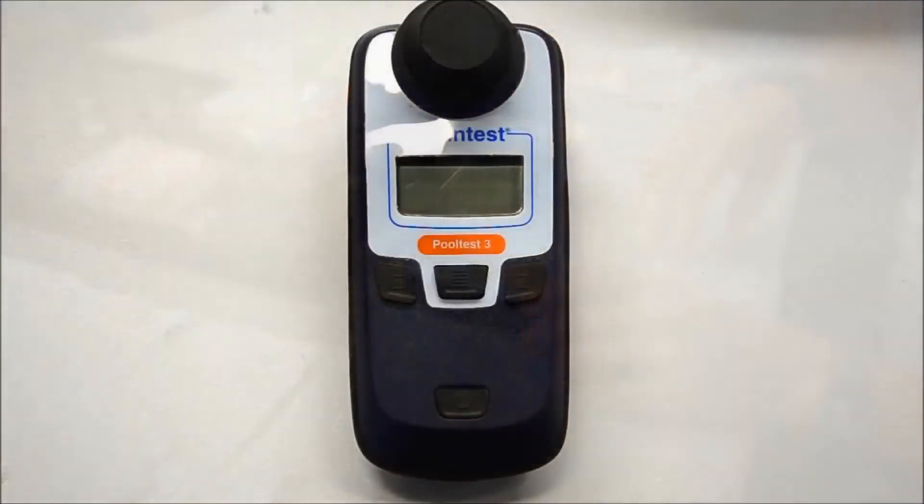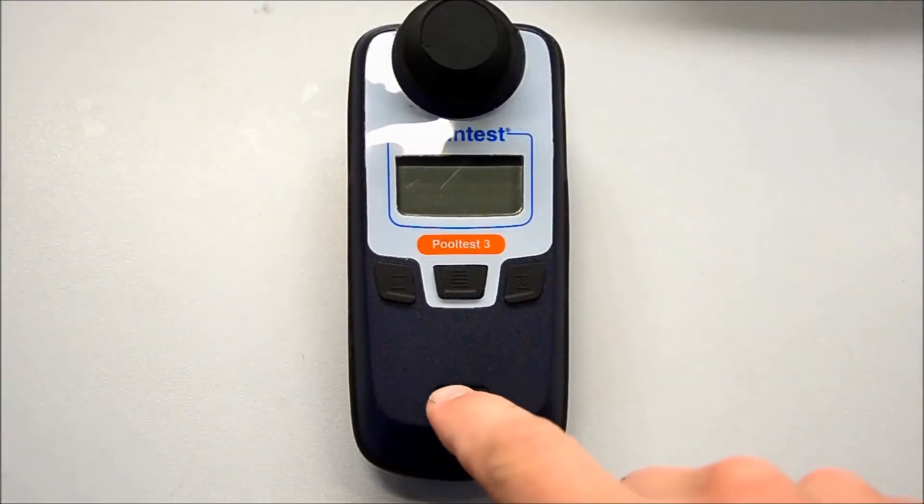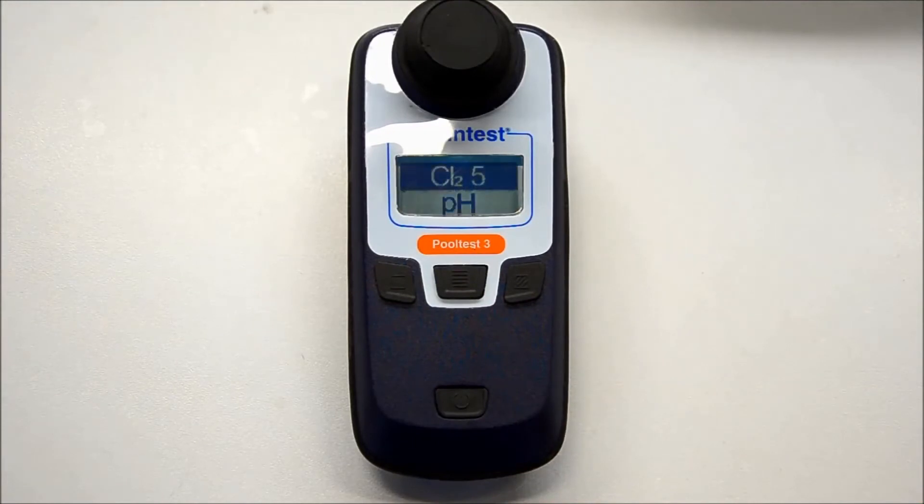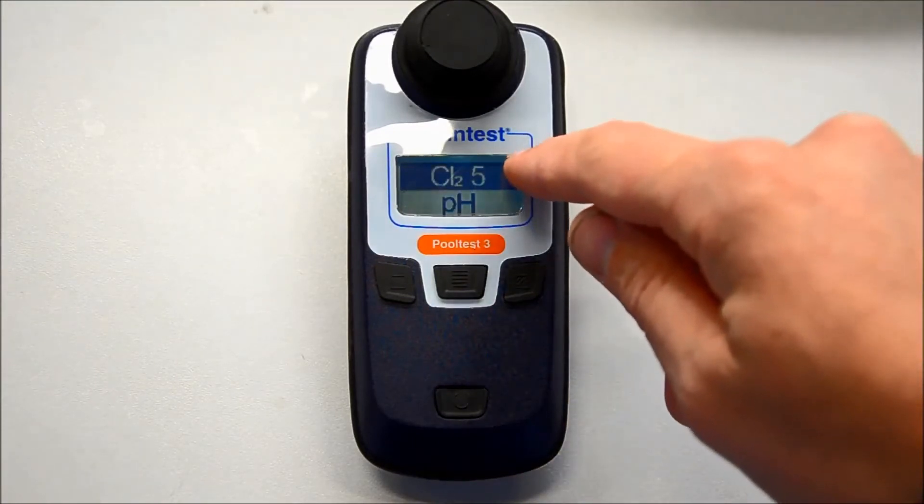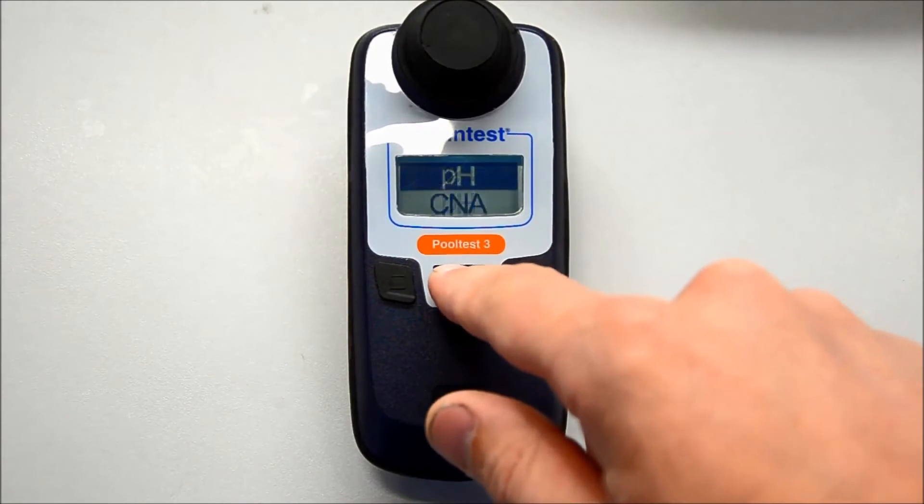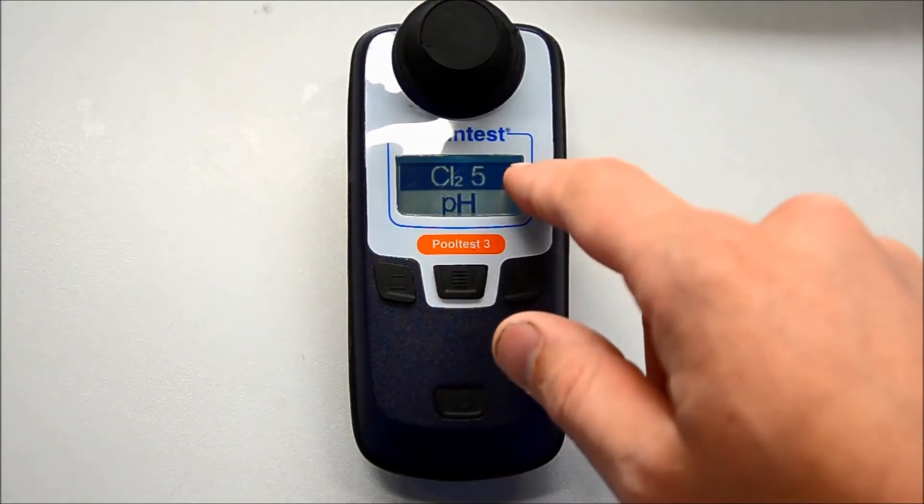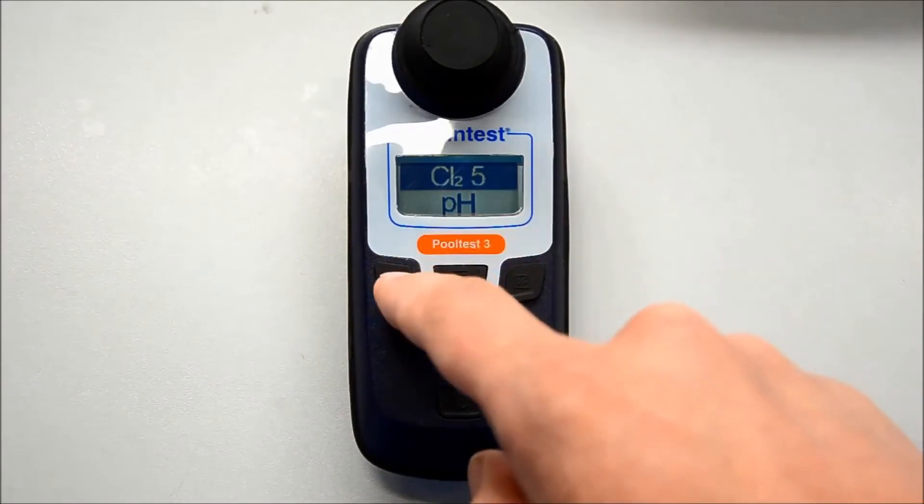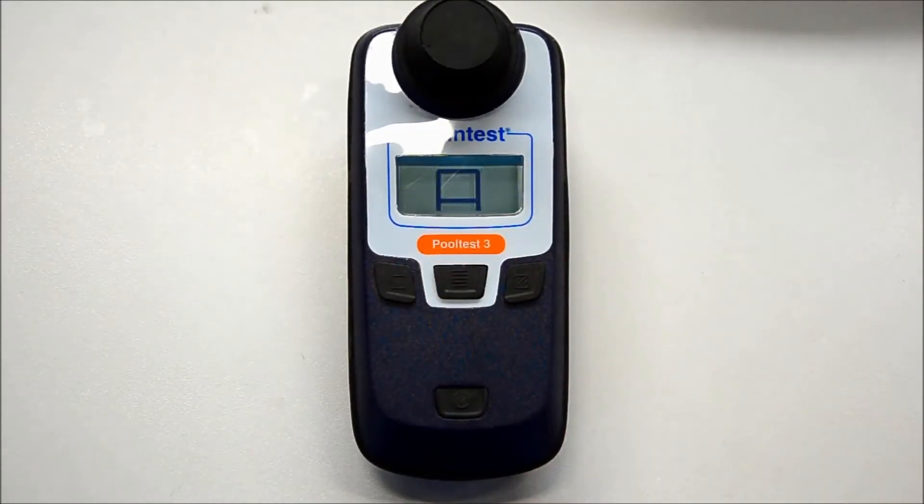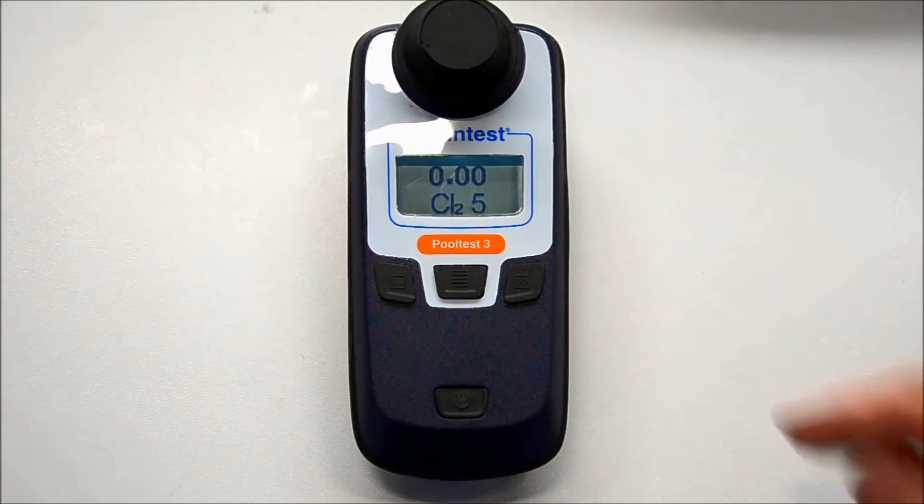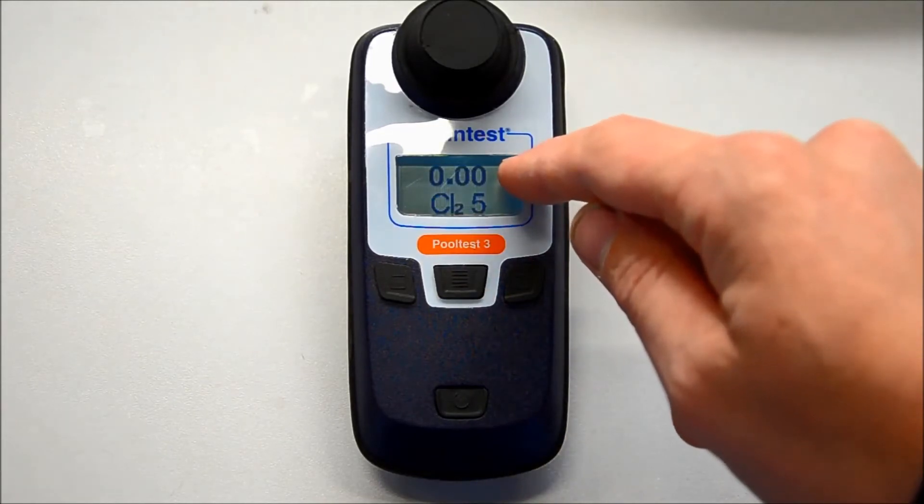We turn on the pool tester. Make sure that CL2-5 is highlighted. Then press the left top button to make a clear water reading. Now the pool tester is calibrated for clear water.